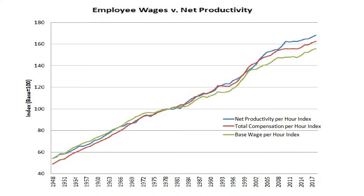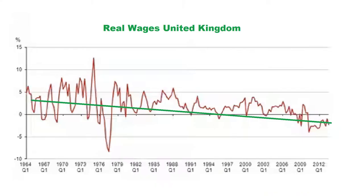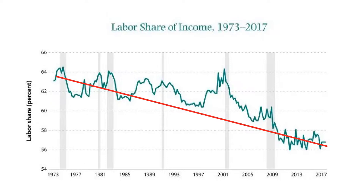You'll see several graphs similar to these. Here's one for the United Kingdom — real wages have been dropping since 1964. So the workers are losing the value of their labor. And here's another one: labor share of income, and you can see how that's been dropping over at least the last 50 years.